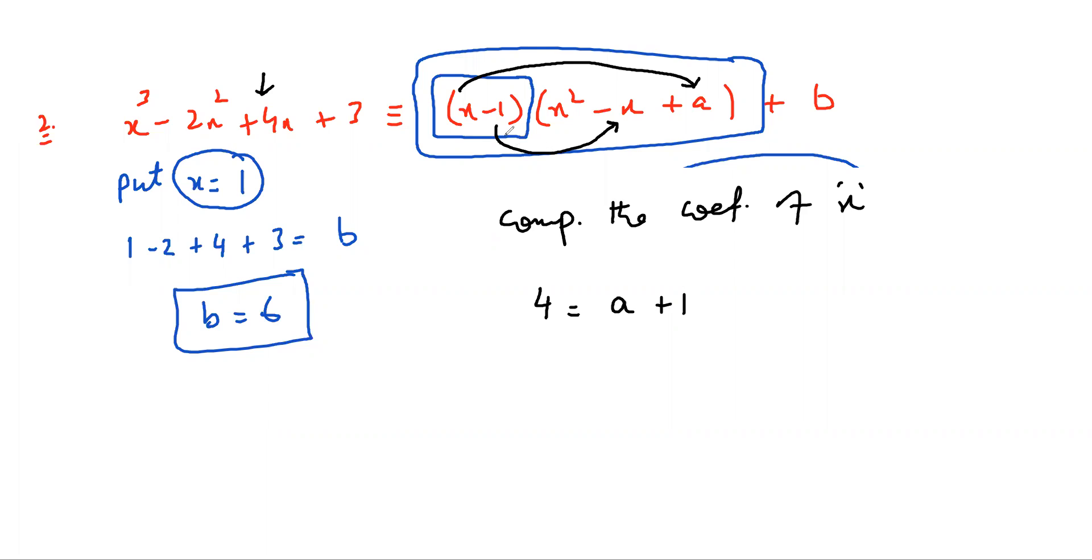Yes, sir. Because basically, you have 4X on the left-hand side, and you have AX plus X on the right-hand side. And you can take X common from here. This is A plus 1. So this A plus 1 is equal to this 4. So you have A equal to 3.